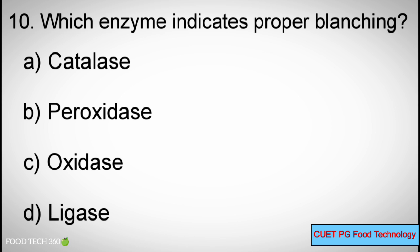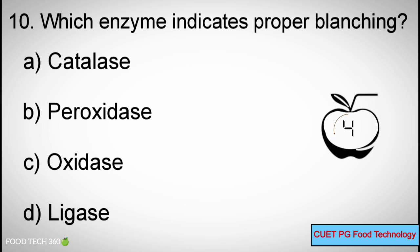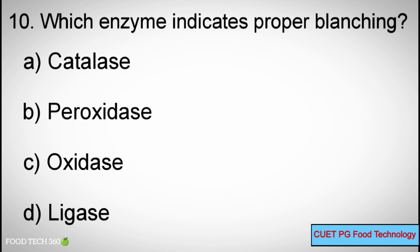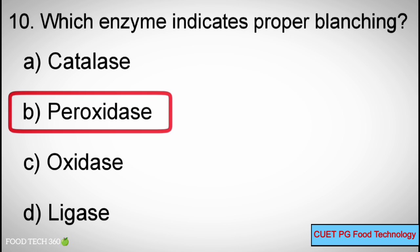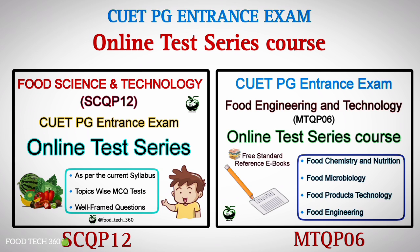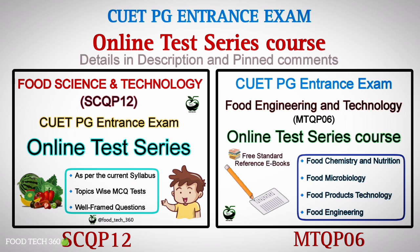Q10: Which enzyme indicates proper blanching? A. Catalase, B. Peroxidase, C. Oxidase, D. Ligase. Correct answer: B. Peroxidase.